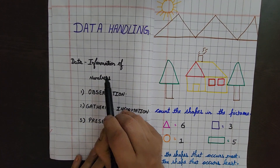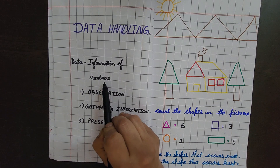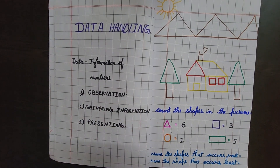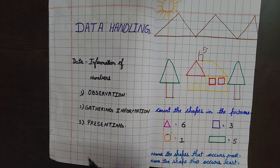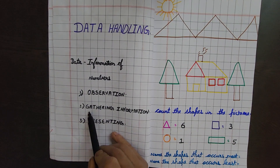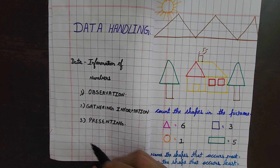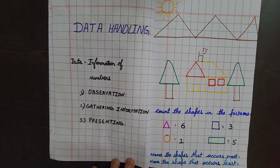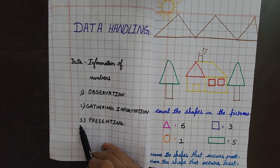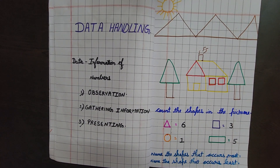In data handling, we have three steps. First is observation — we observe and look. Second is gathering the information — from what we observed, what information are we getting? Third is presenting — once we get the information, we have to present it. This is data handling.